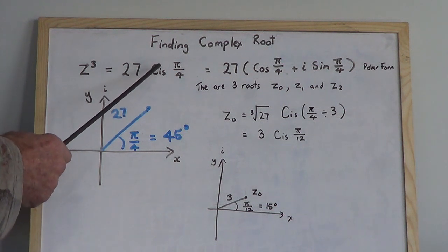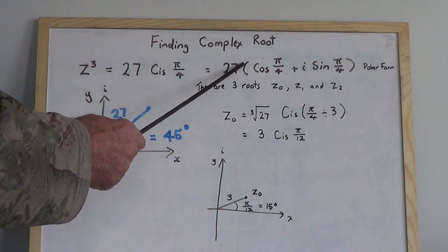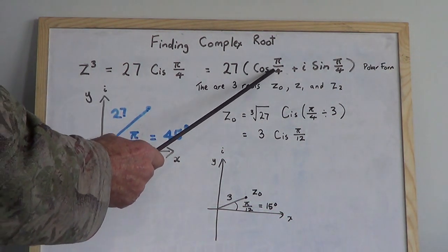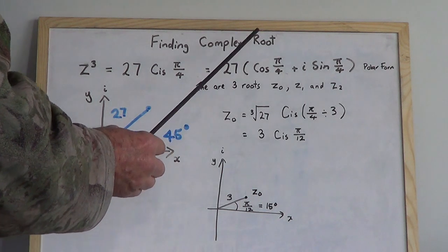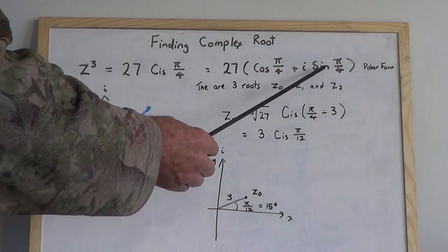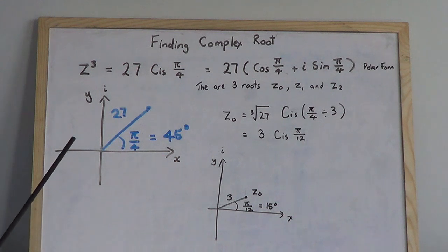Cis(π/4) means in brackets we have cos(π/4) + i·sin(π/4). That's the real part and that's the imaginary part. This complex number looks like this, at that point there.